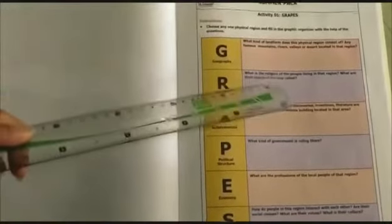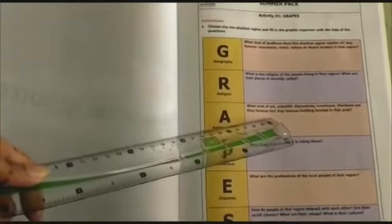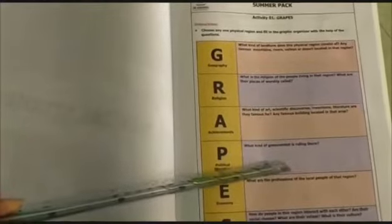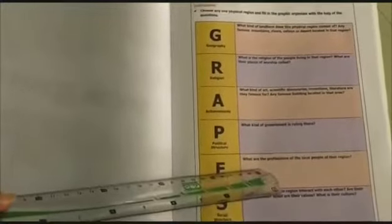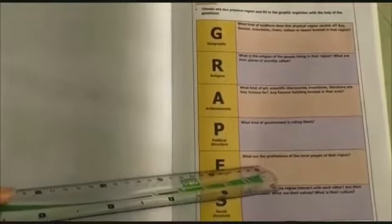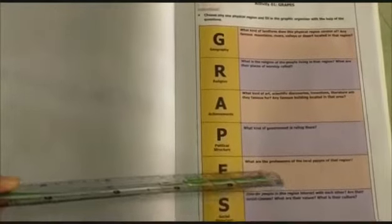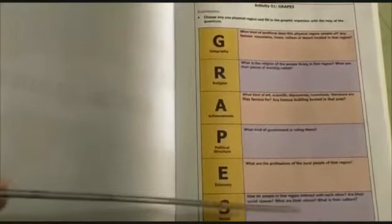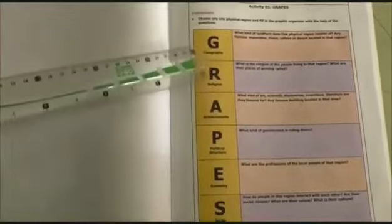For example, if I chose the mountain region, you look at how people practice their religion there, what is famous there — inventions, art, literature, famous buildings. What is the government and rule there? What is the economy there? What are the people like there? What is the social structure, the culture, the values, and the interaction there? In this whole activity, you have to give answers to this recording.